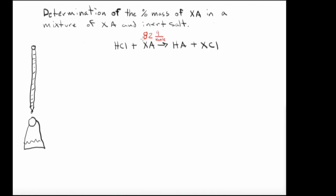So I'm going to write that in over the top of the XA. We're going to be using a titration to determine the percent mass, and the concentration of the HCl is going to be 0.2 molar.